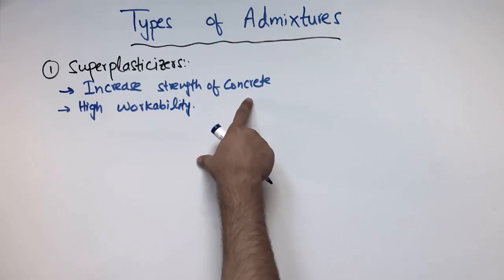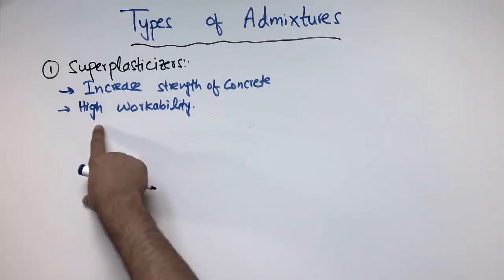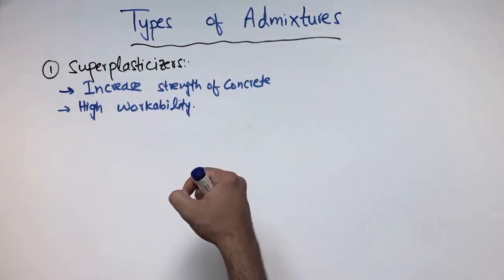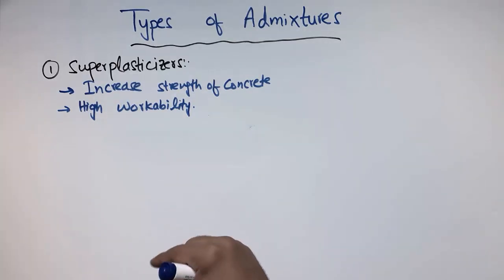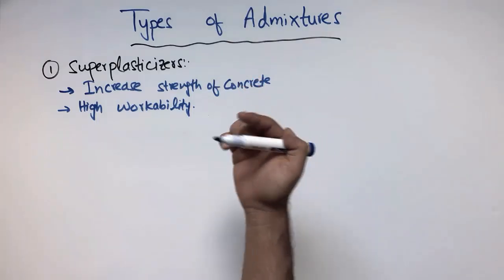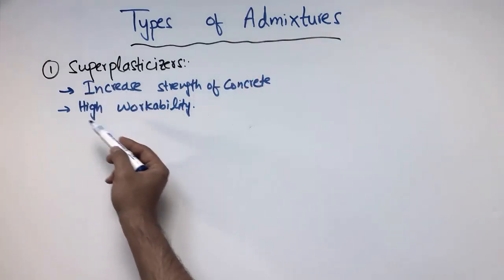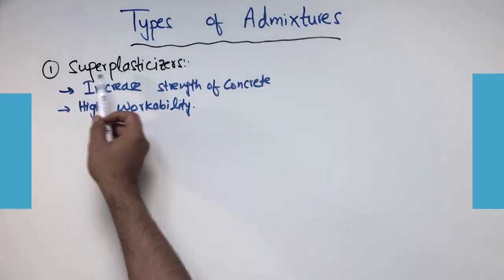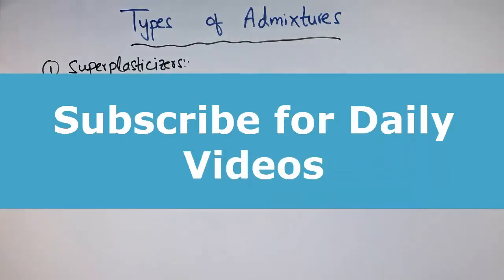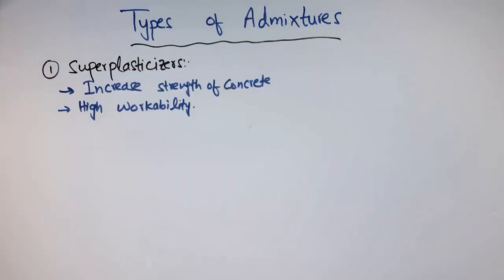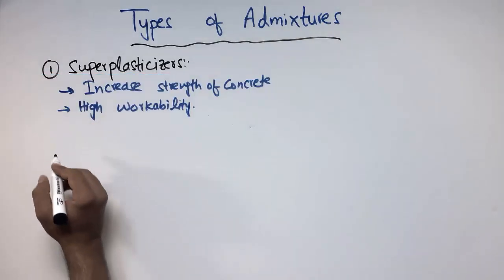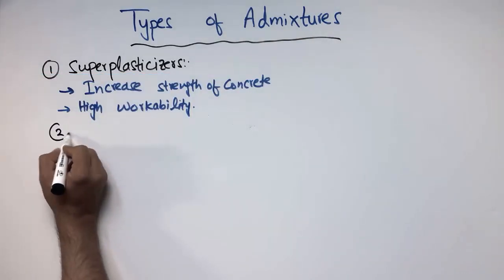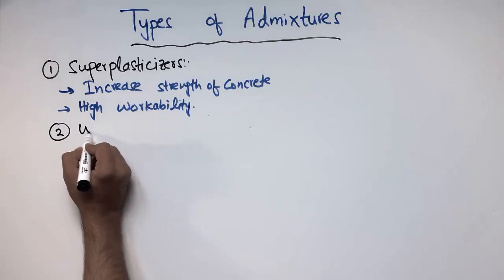The first purpose is to increase the strength of the concrete and the second one is to increase the workability of the concrete. So when we require to increase the strength or to increase the workability, we use super plasticizer in our concrete. The second type of admixture is the water reducing admixture.